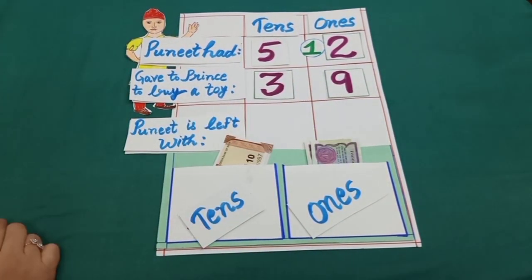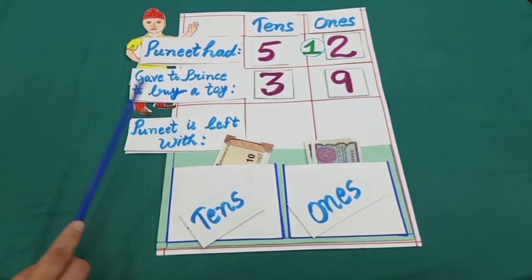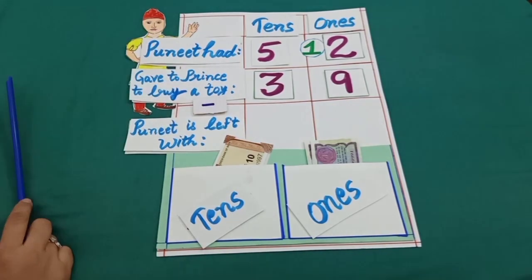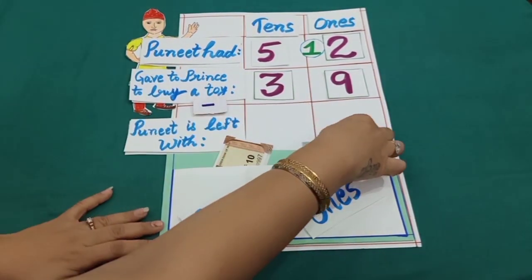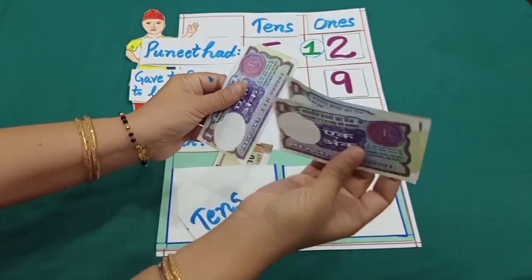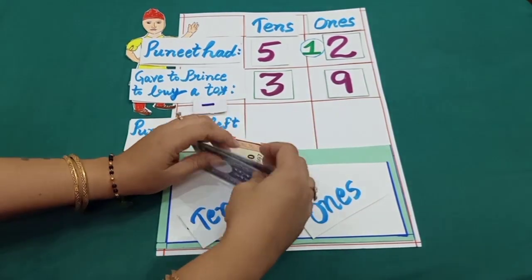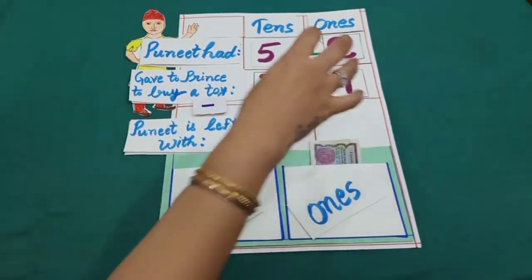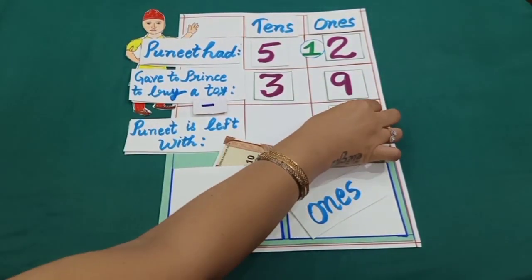Dear students, let's see how much money is left with Puneet. Let's count. 1, 2, 3. 3 rupees is equal to 3 ones.